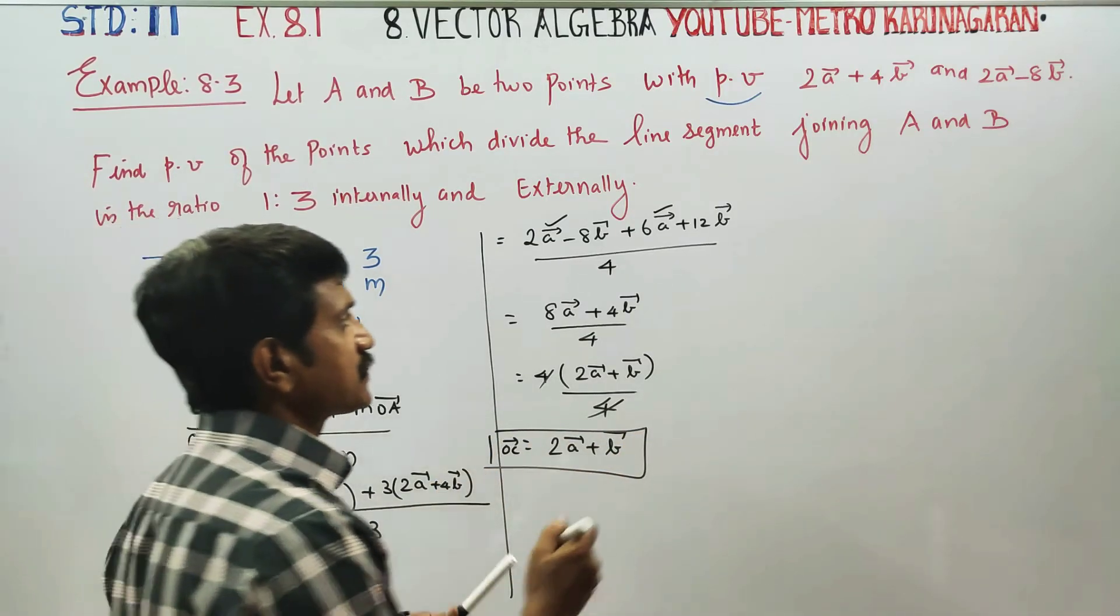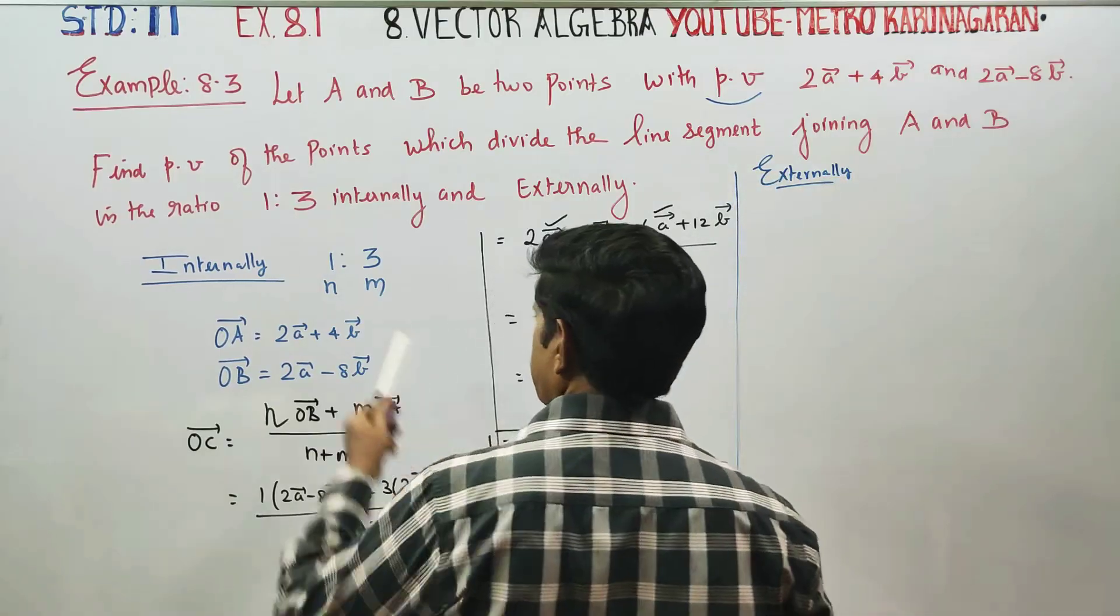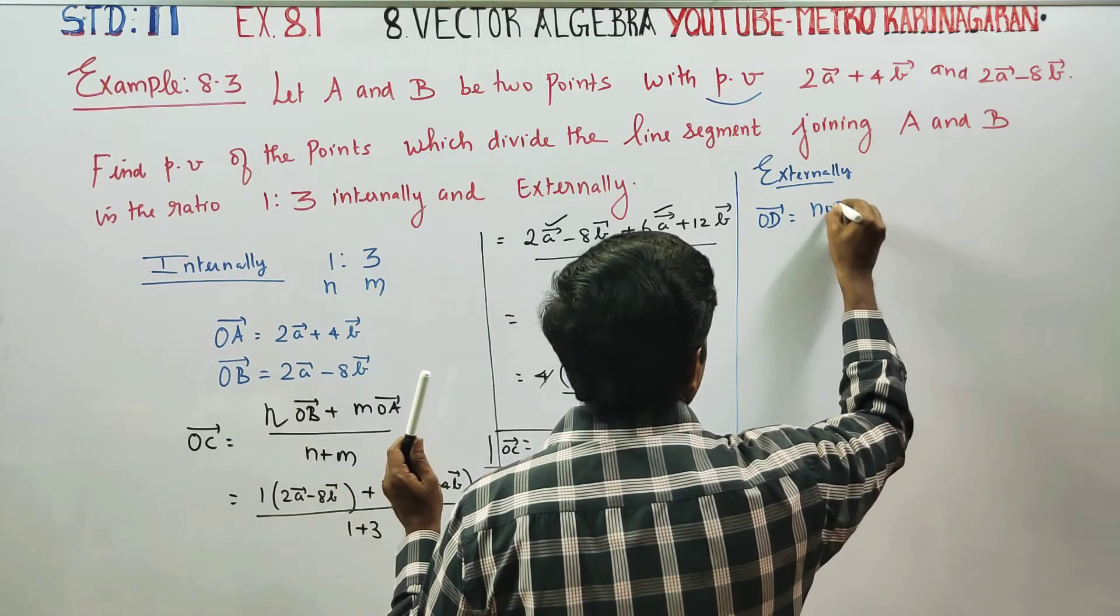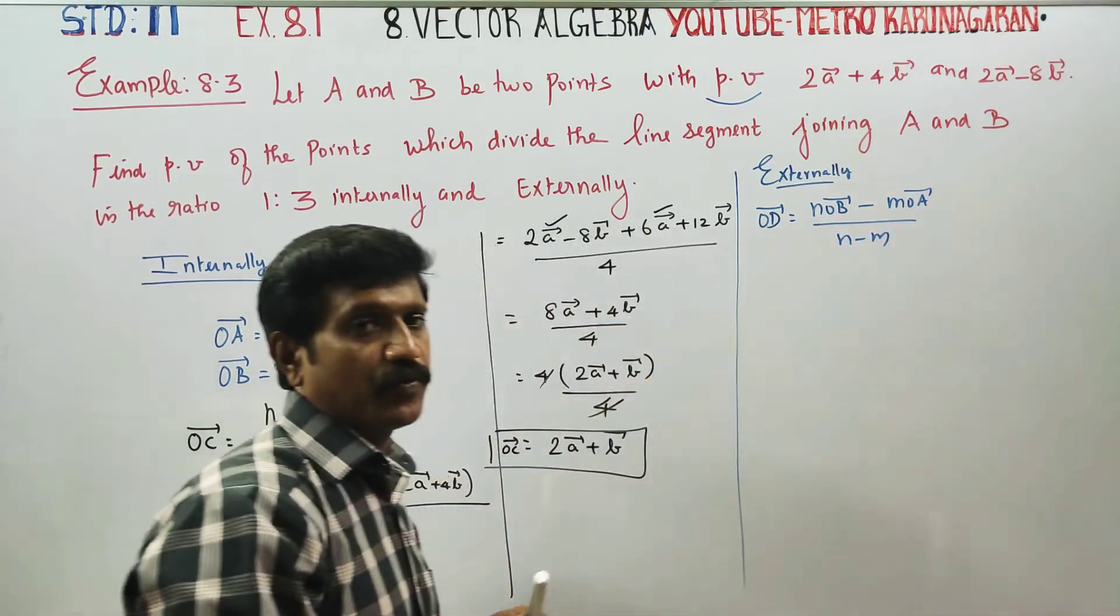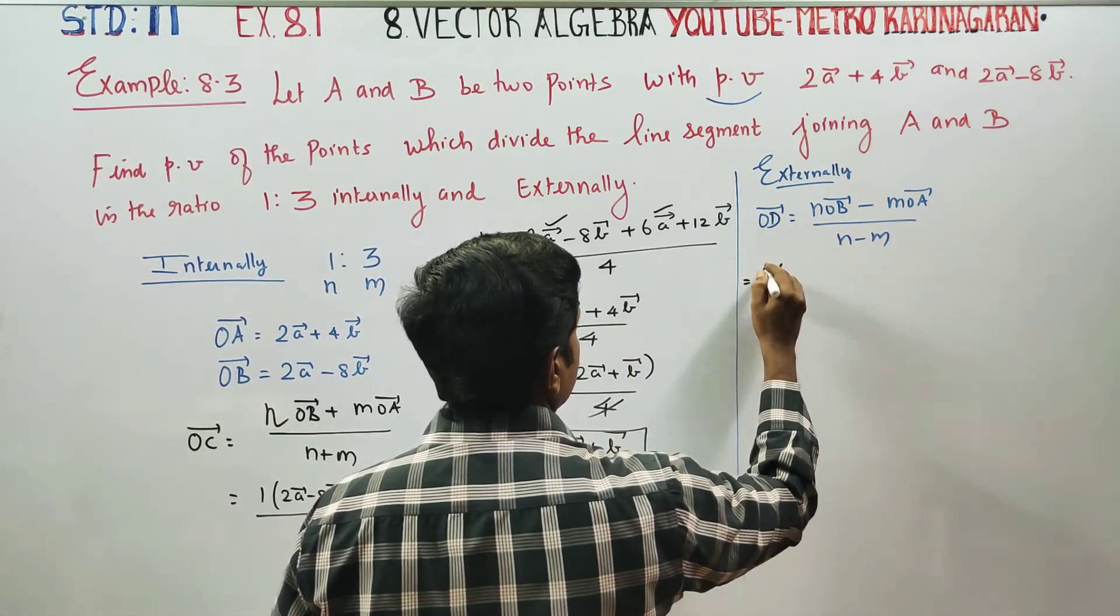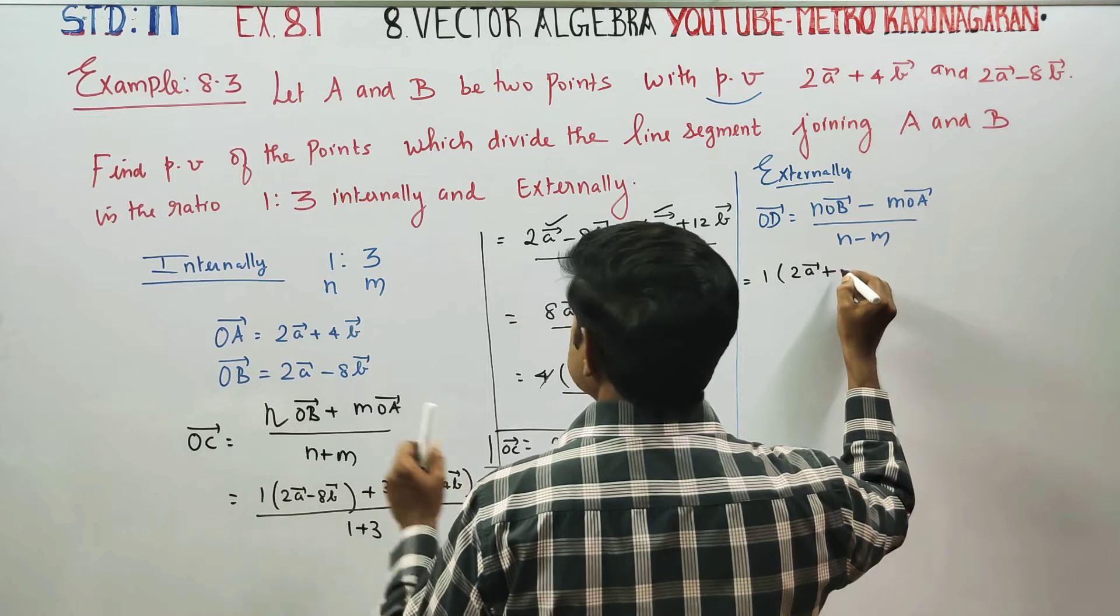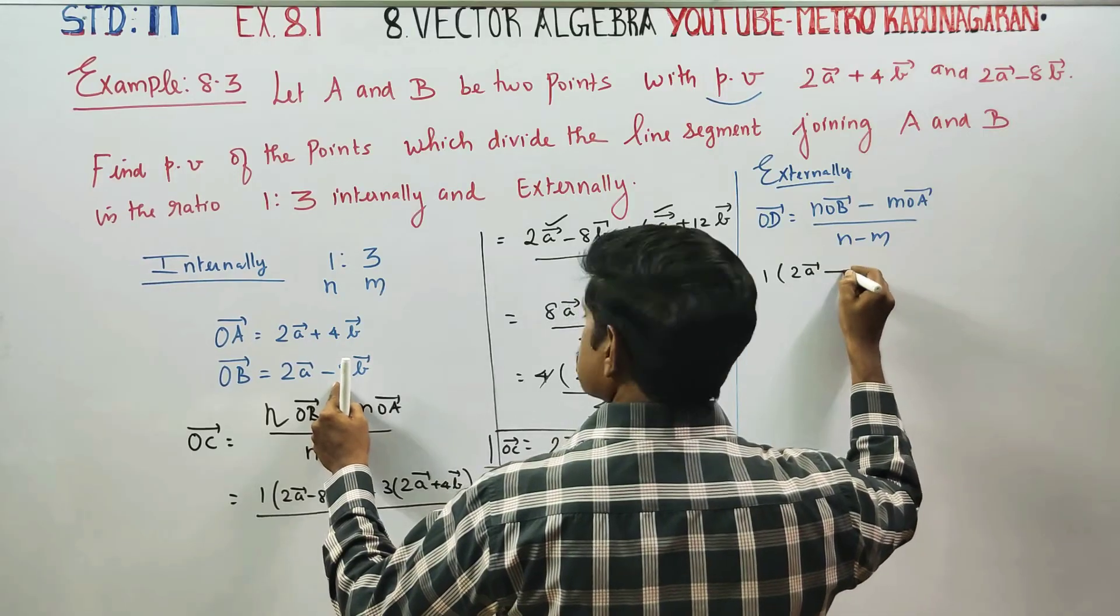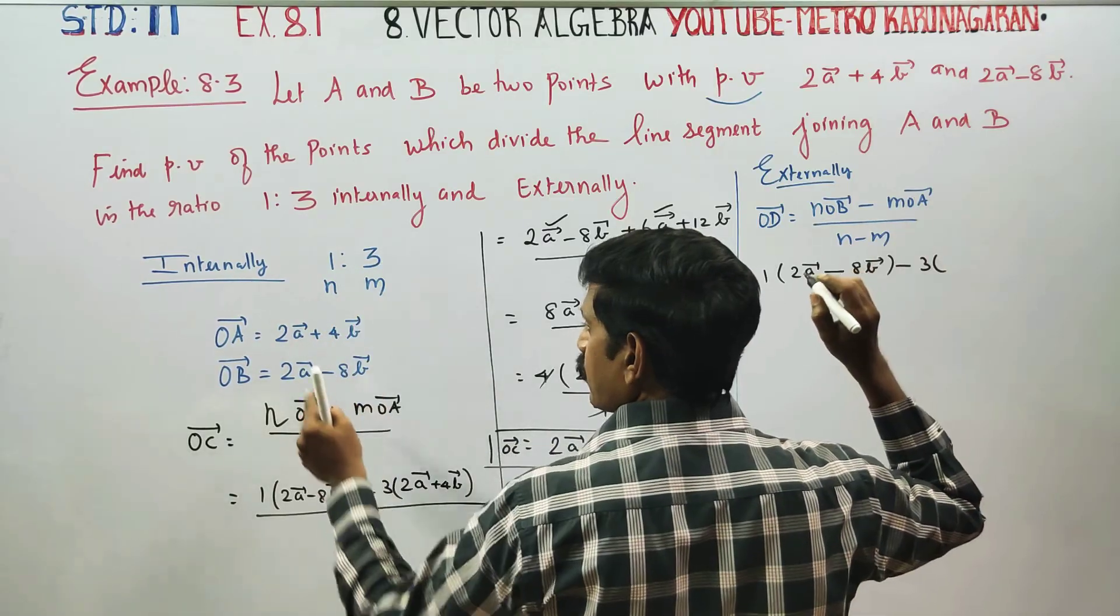Externally, n is equal to 1 into OA vector 2a plus 4b, minus m, m is equal to 3, OB vector 2a minus 8b vector.